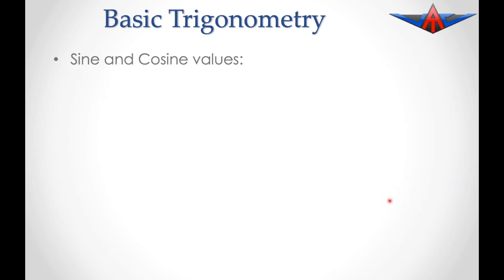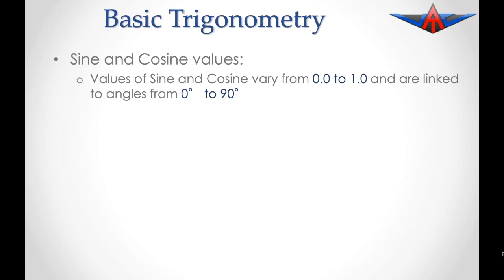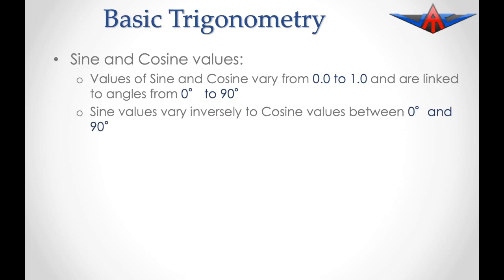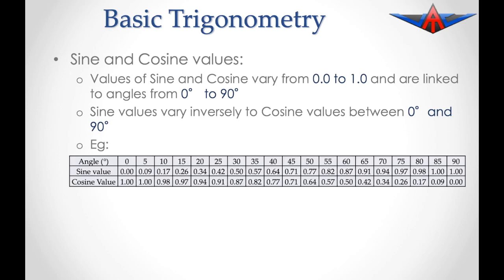Let's have a look at sine and cosine values. These vary from 0 up to 1 and are linked to angles that vary from 0 degrees up to 90 degrees. Sine values vary inversely to cosine values between 0 and 90 degrees. The sine value starts at 0 and progressively increases up to a value of 1 by the time we get to 90 degrees. The cosine of the angle is 1.0 at 0 and diminishes to 0 by the time we get to 90 degrees.